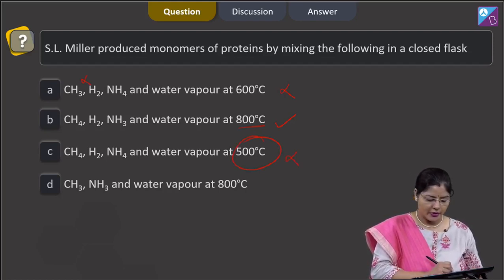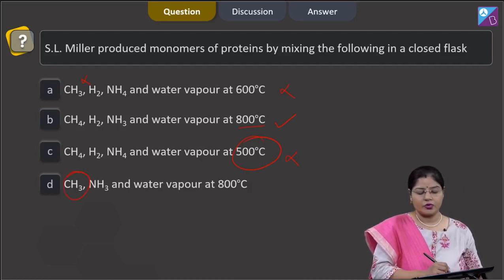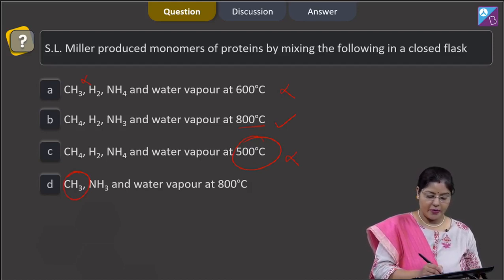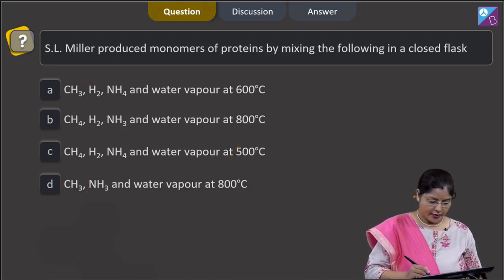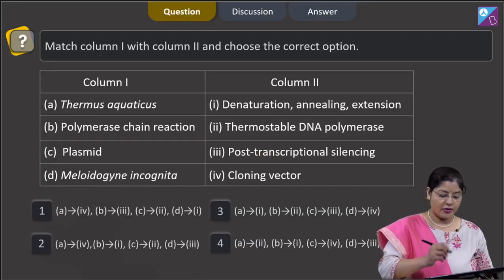Option D: CH3—CH3 was not present, methane was present in the closed flask—NH3 and water vapor at 800 degrees centigrade. Because of this, this cannot be the correct answer. So the correct answer to this question is option number 2.